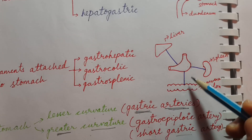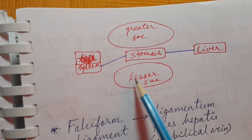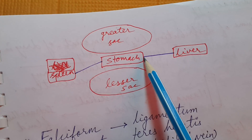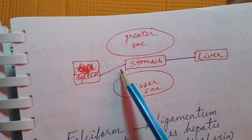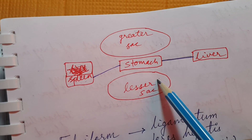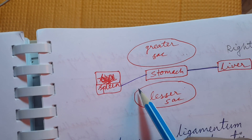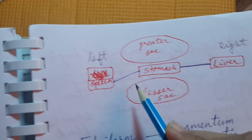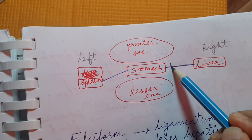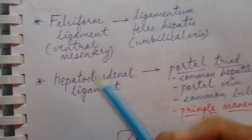Now, considering the greater and lesser sac with the stomach in between — the gastro-hepatic ligament separates the greater and lesser sac on the right side, while the gastrosplenic ligament separates them on the left side. This is given in First Aid. Whenever a surgeon wants to make a connection between the greater and lesser sac, they usually cut the gastro-hepatic ligament to gain access from the greater sac into the lesser sac.